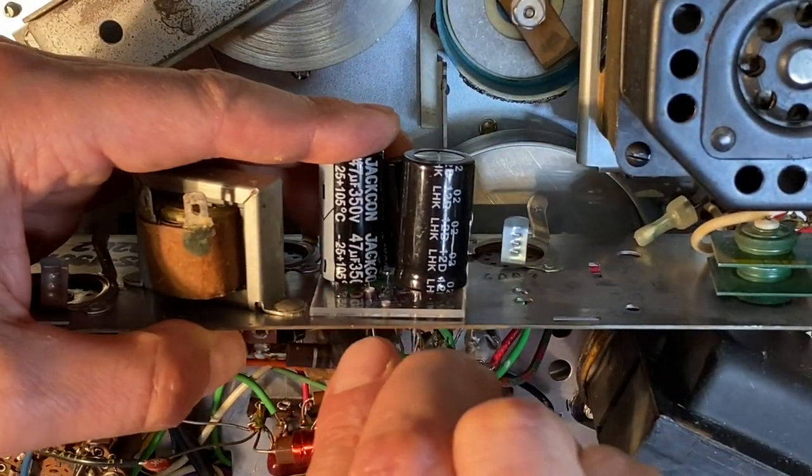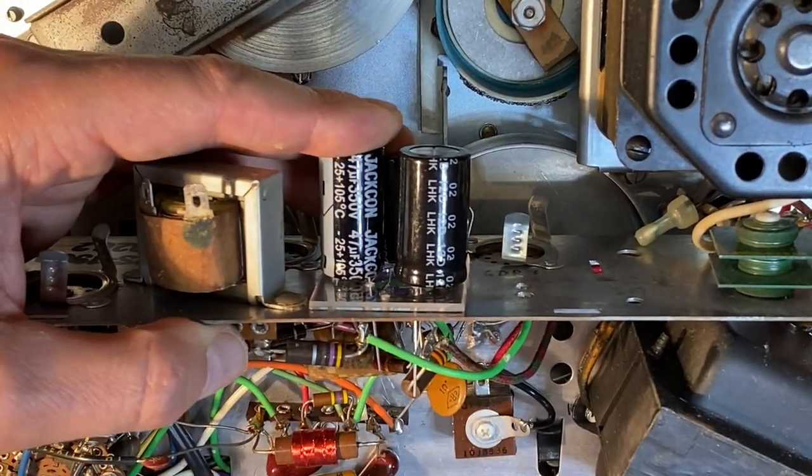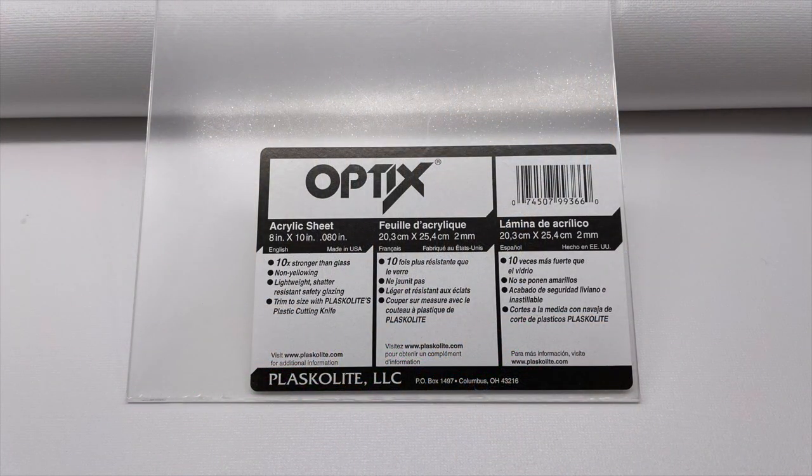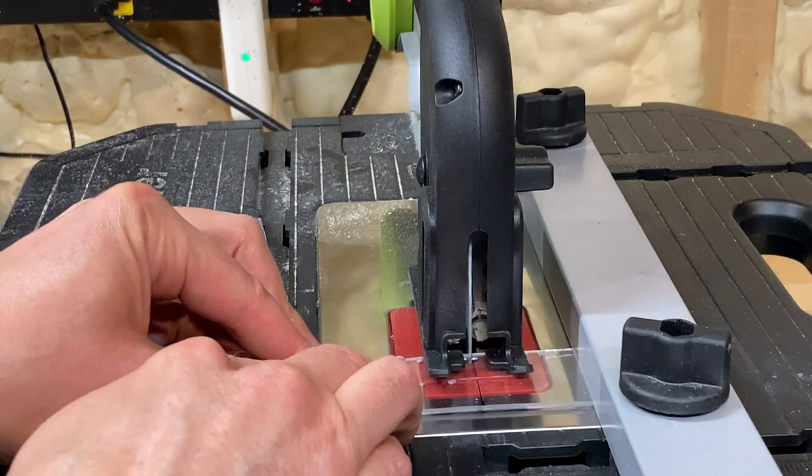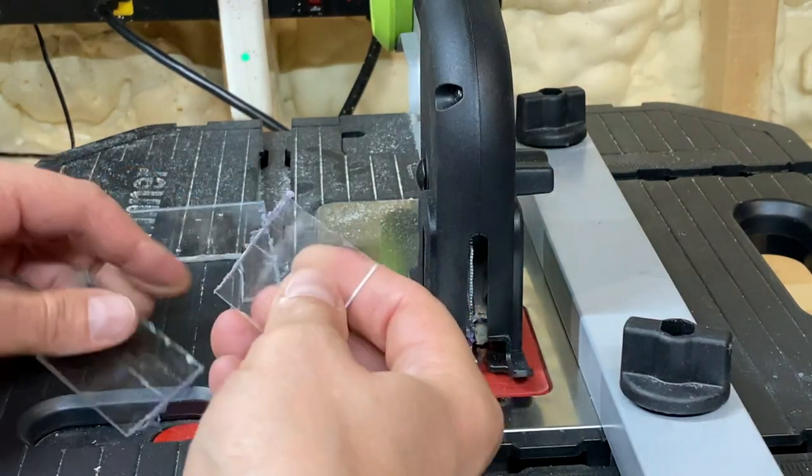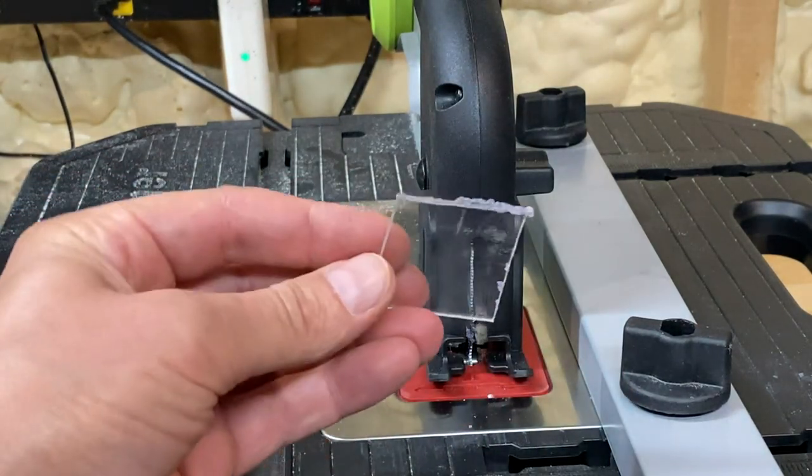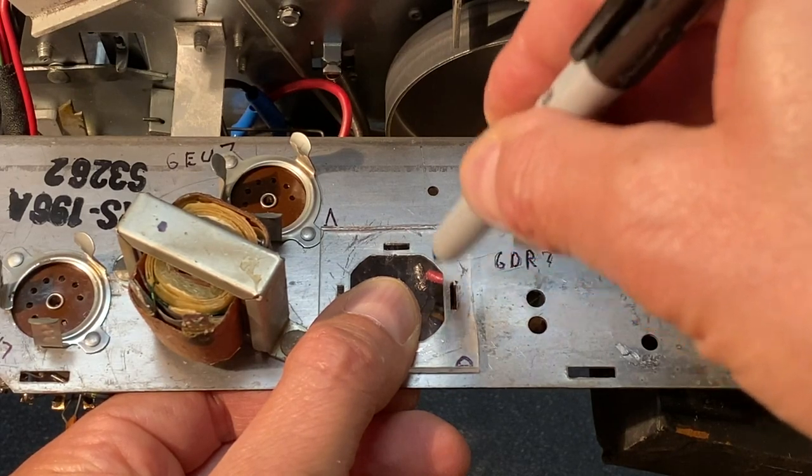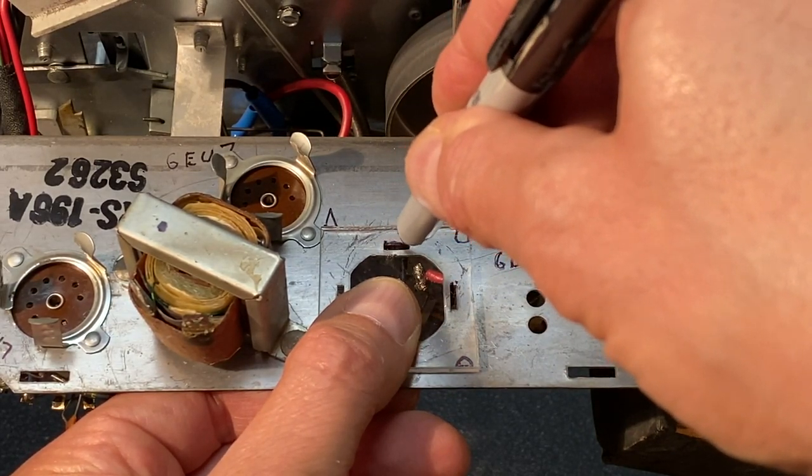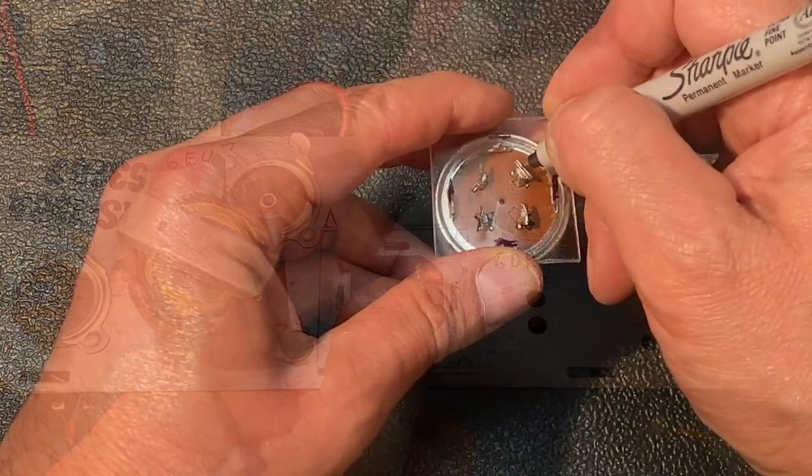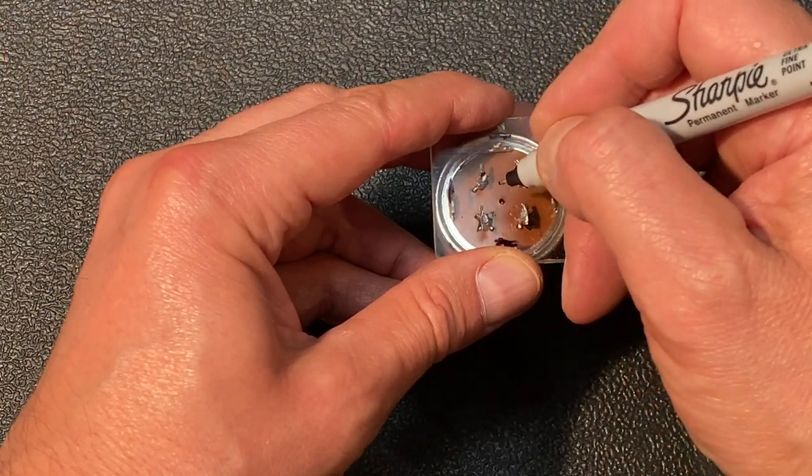Let's first install the new filter capacitors. To do this I created a new method that worked well. The trick is to use clear acrylic plastic. First I cut a one and a half inch square piece of the material. I marked the plastic where the twist lock tabs of the old electrolytic fit into the chassis, and also where the old electrolytic's terminals protruded.